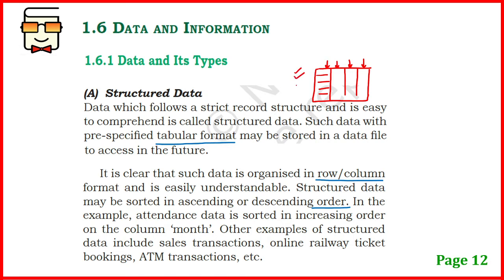In a bank passbook, there is the amount, the date, and the type of transaction. Each row is the same entity describing a transaction. One column represents the date, the second can represent the amount, and the third can represent the type of transaction. Each column has a fixed format and structure — the date would be in a particular format, the amount in a particular format. Structured data has a fixed format, and if order matters, the data can be organized in ascending or descending order.